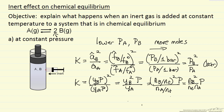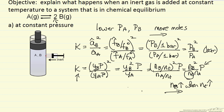Now we can ask: what happens at constant pressure if I change the number of moles? The equilibrium constant hasn't changed — temperature is constant — and pressure is constant. If I increase the total number of moles by adding an inert, then B must increase. So the reaction must go to the right when I add an inert at constant pressure — the same result predicted by Le Chatelier's principle.